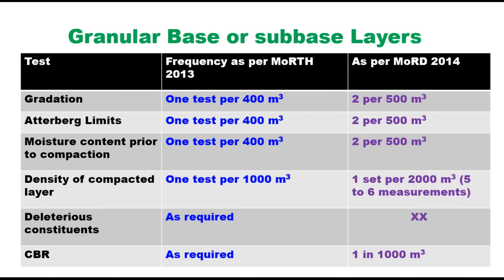Case one is when you provide the base or sub-base of granular material — that is a granular base or sub-base layer. These are the types of tests and frequency of tests as specified in MORTH 2013 and MORD 2014. Tests include gradation, Atterberg limits (liquid limit and plastic limit), moisture content prior to compaction, density of compacted layer, deleterious materials in the aggregate, and CBR. The frequency is one test per 400 cubic metres of aggregate, or two tests per 500 cubic metres.